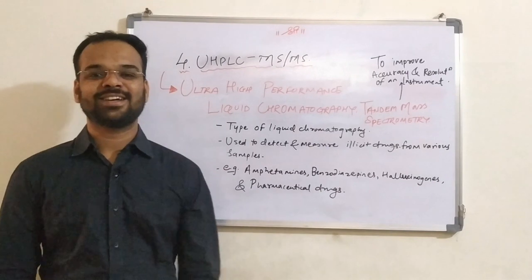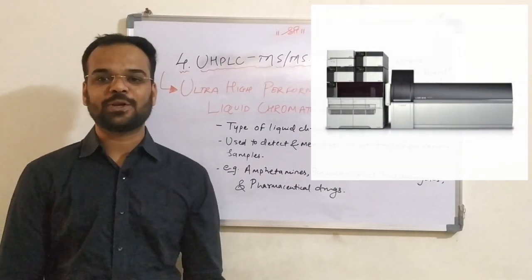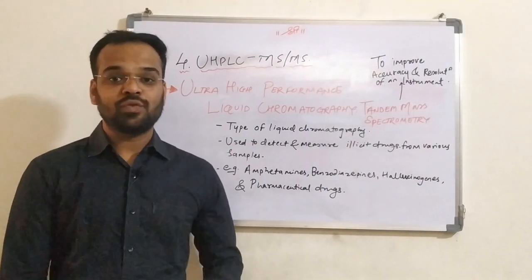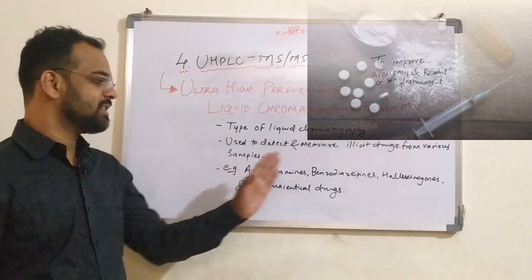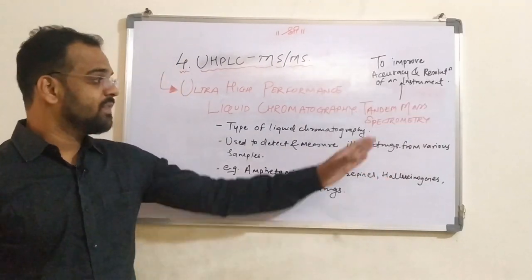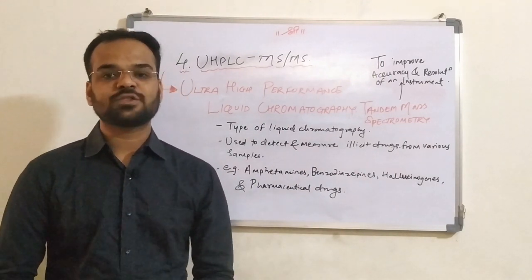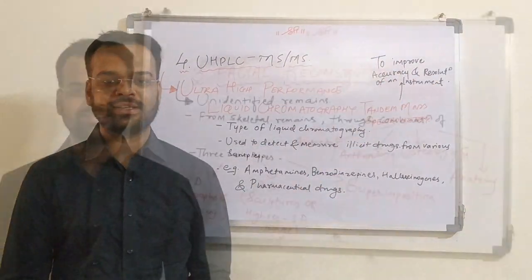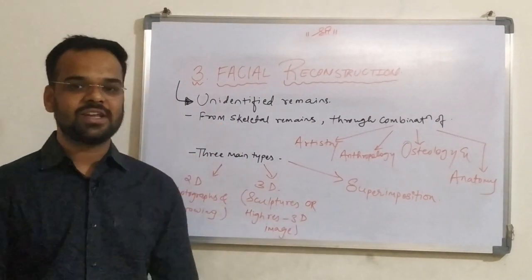Number four: UHPLC-MS/MS, that is Ultra High Performance Liquid Chromatography Tandem Mass Spectrometry. This is a type of liquid chromatography used to detect and measure illicit drugs like amphetamines, benzodiazepines, hallucinogens, pharmaceutical drugs, and so on. Tandem mass spectrometry means two mass spectrometers are attached to each other to improve the accuracy and resolution of the instrument.